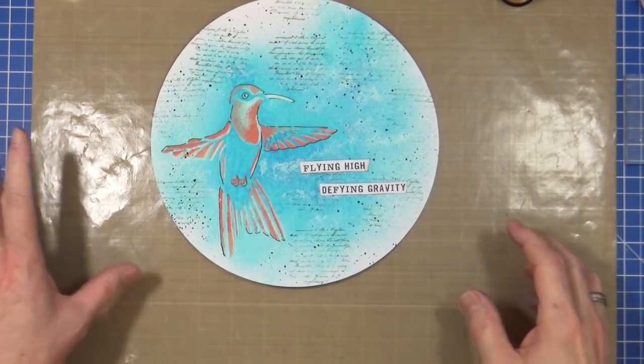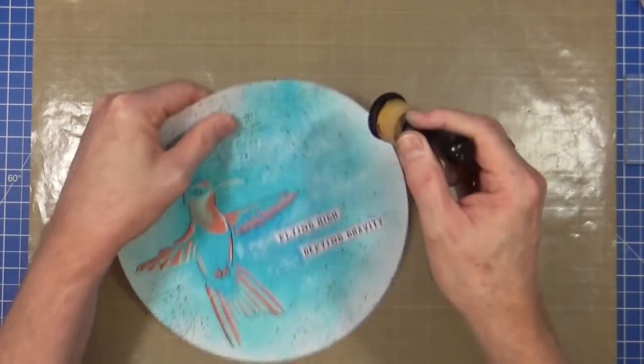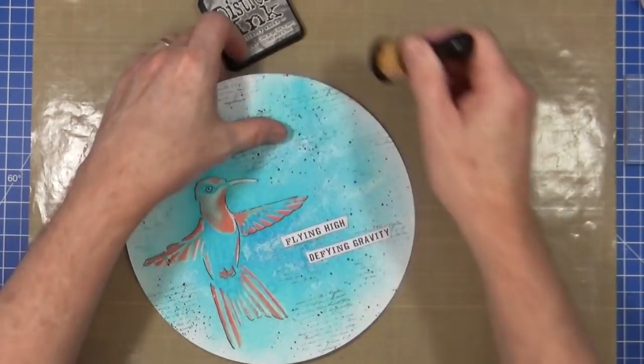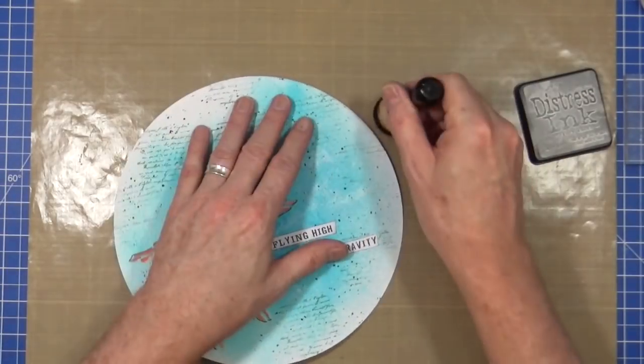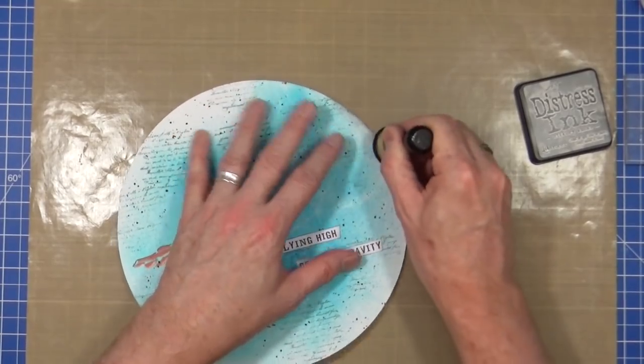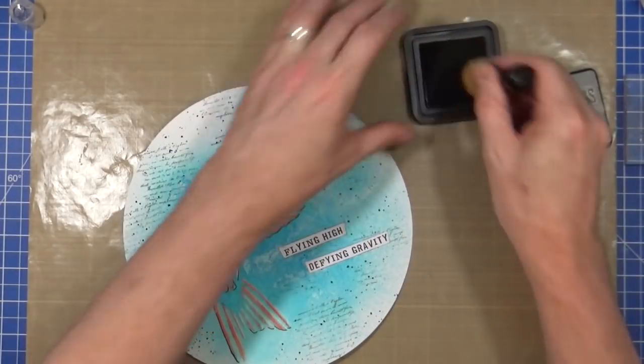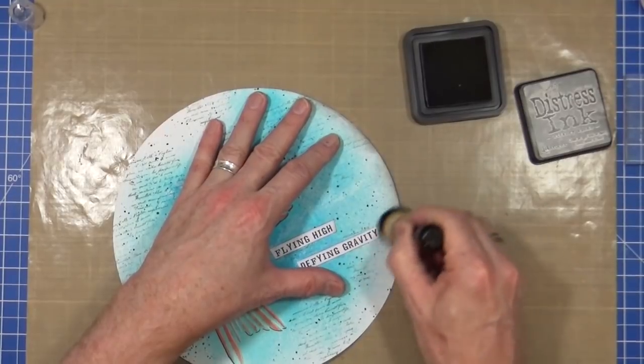And you don't have to go mad. You could always, if you want to, just go around the outside of the page, just to kind of create a bit of a frame, which I think I'm going to do. Just in that grey.